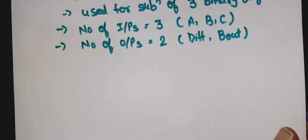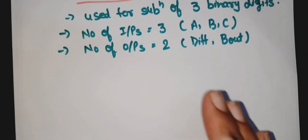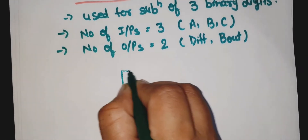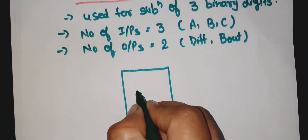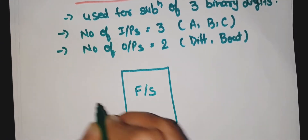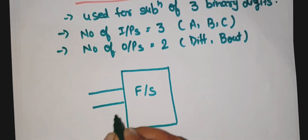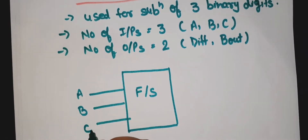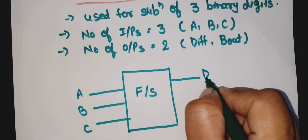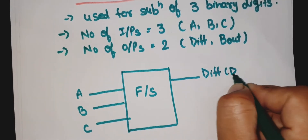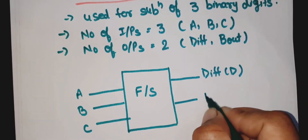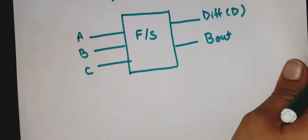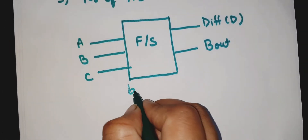B_out is the borrow output. Now I will draw a simple block diagram of the full subtractor. This is the full subtractor with three inputs A, B, C and two outputs: difference, which you can write as D, and B_out, the borrow output. This is the block diagram.